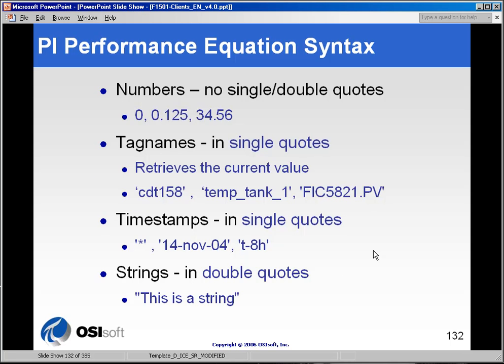Before we begin to discuss calculation data sets, we need to discuss performance equations. Performance equations are calculations that are driven on the PI server and usually manifest themselves in the form of performance equation tags. These are tags that take raw values from the PI server, perform some sort of calculation, and write the results to themselves, so people can query those tags instead of the raw value tags without having to do the calculations themselves.